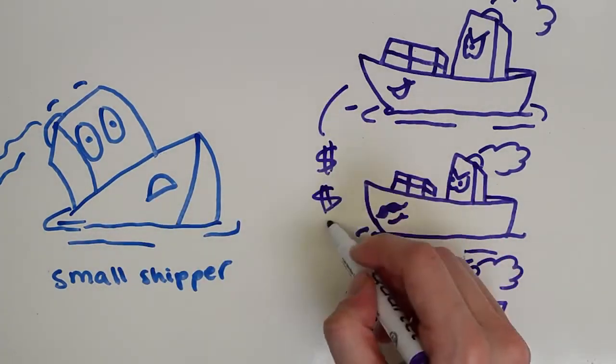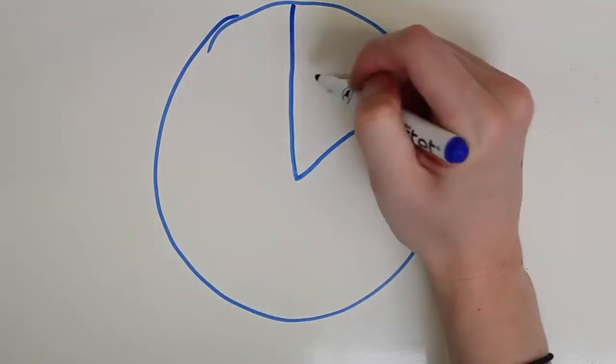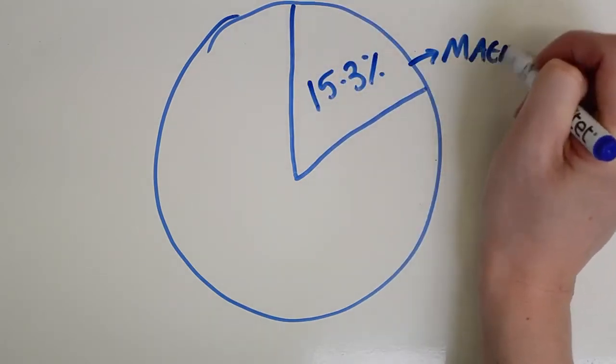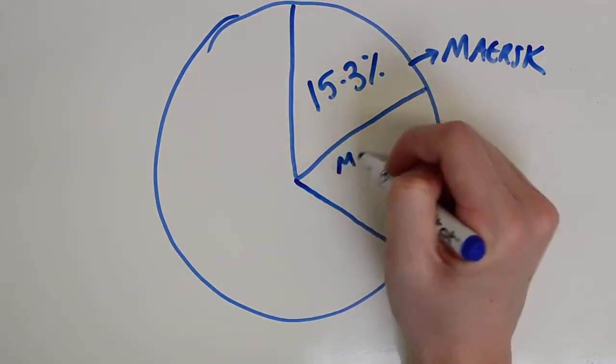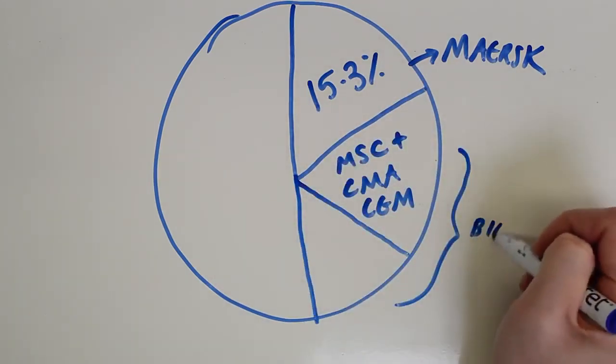Maersk, the largest shipping company in the world, currently controls 15.3% of the global container capacity. The big three carriers together, Maersk, MSC, and CMA CGM, control 38%, up from 26% in 2005.